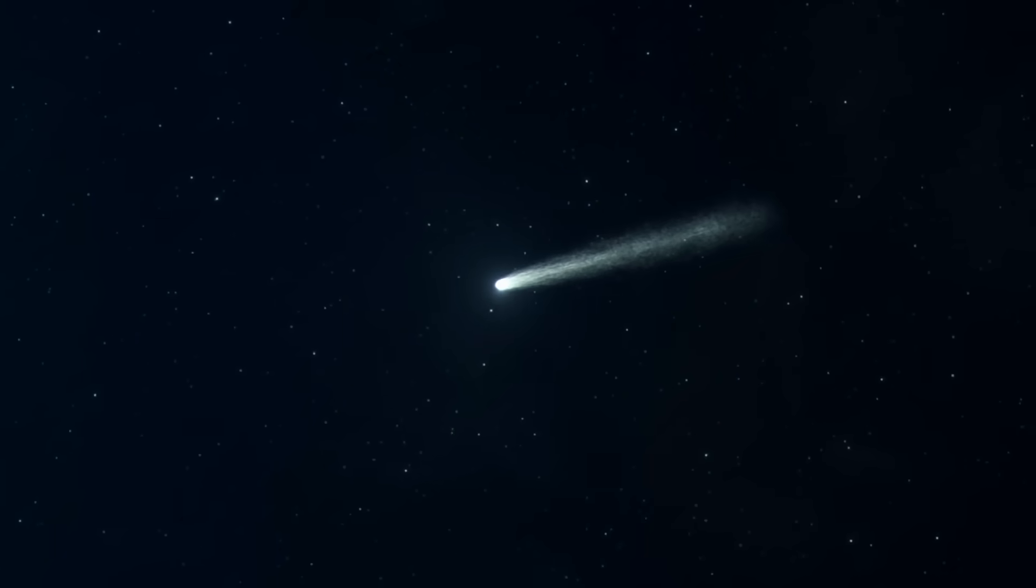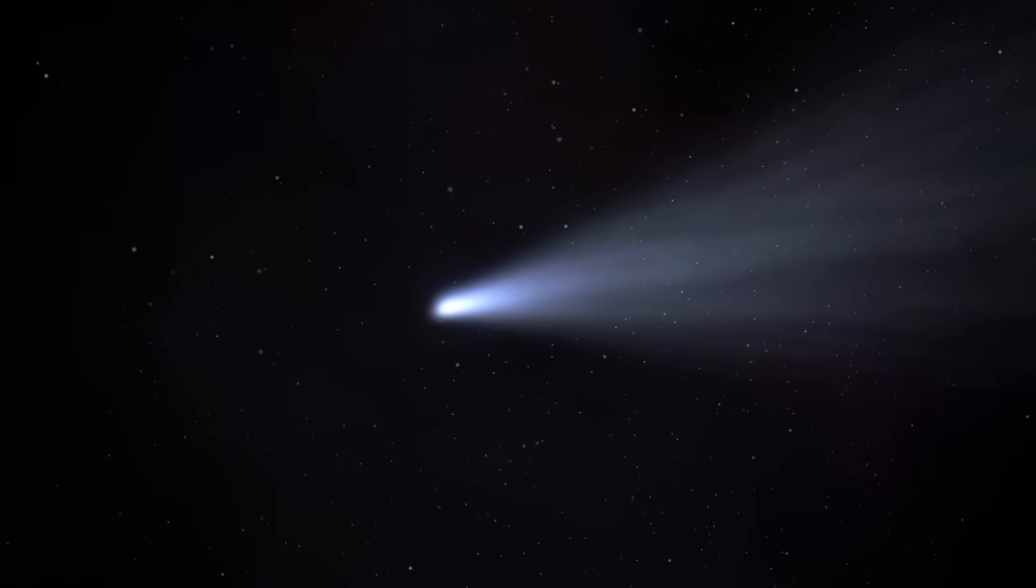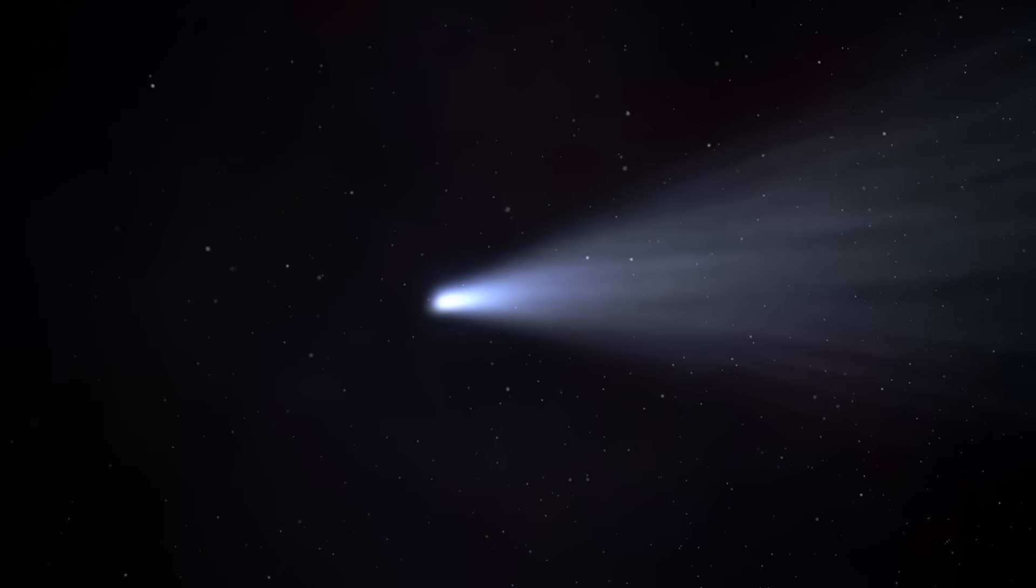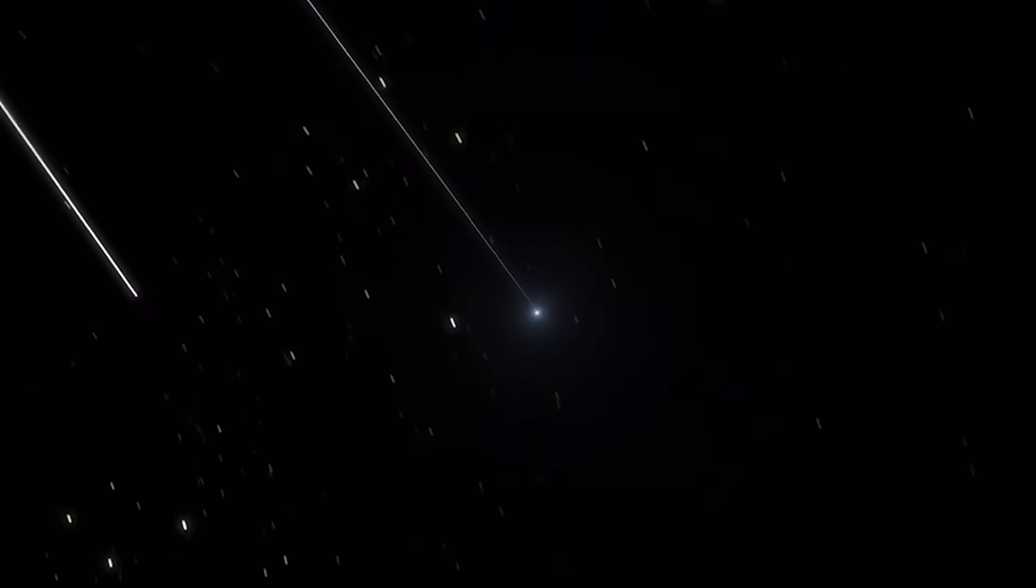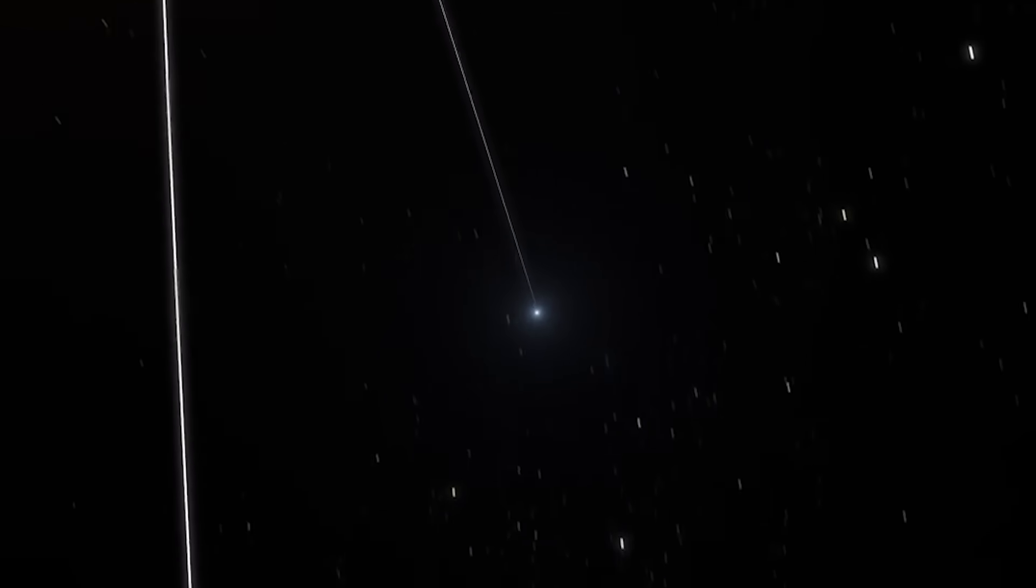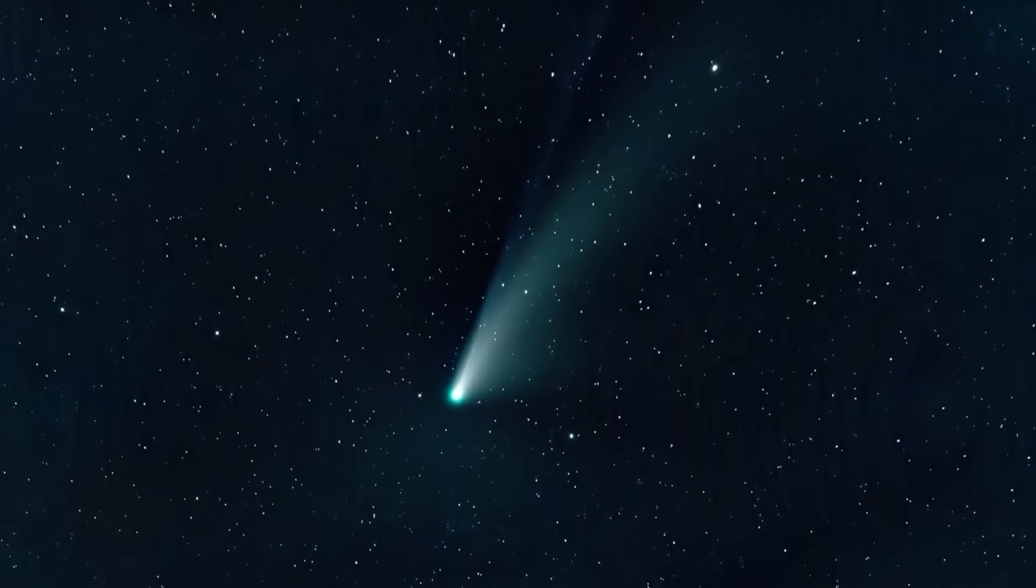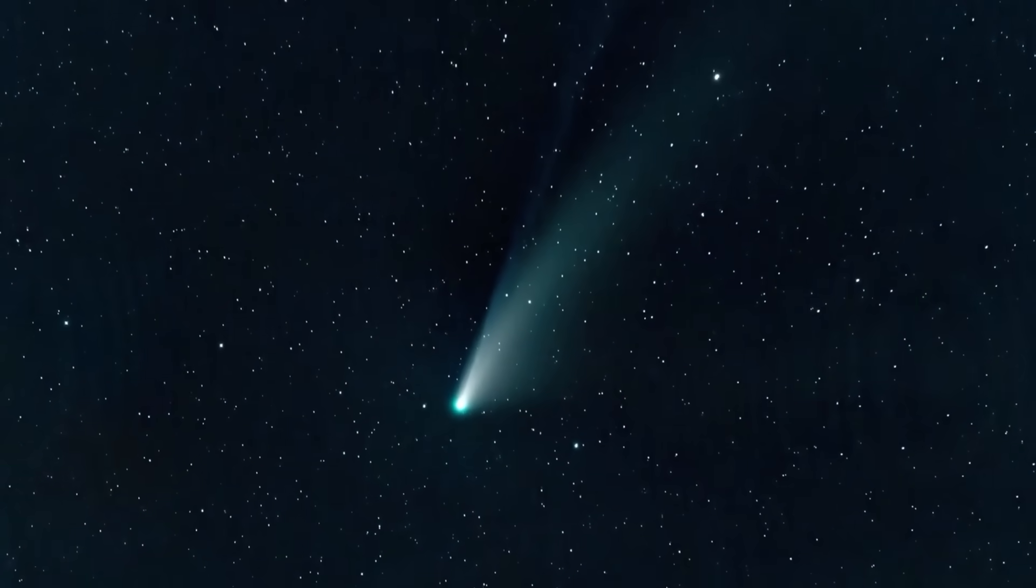Comets are famously tricky targets. They are icy wanderers, often no bigger than a small mountain, moving at mind-boggling speeds, sometimes over 100,000 miles per hour. Pinpointing their exact trajectory with such accuracy that an impact date can be locked down has always been a monumental challenge.